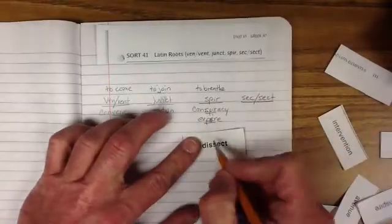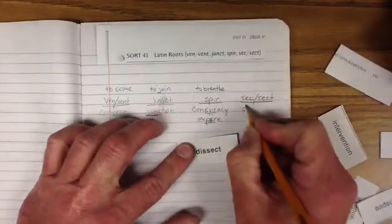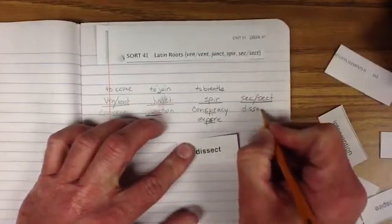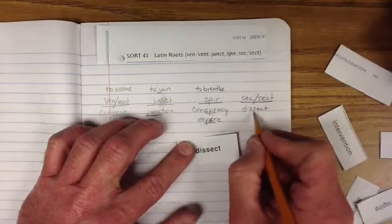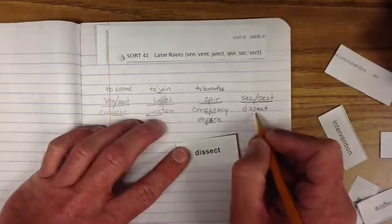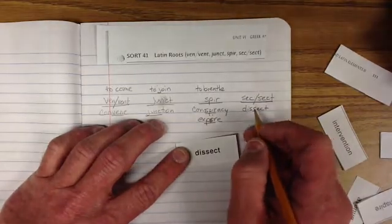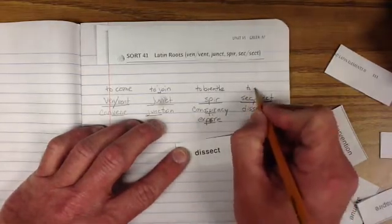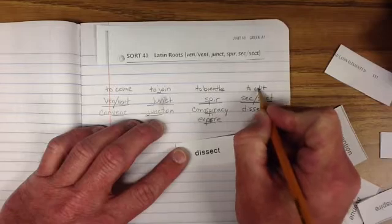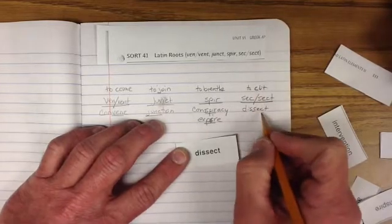Now sect or sect. Now this one's an interesting one. Because we've got dissect. So we put D-I-S-S-E-C-T. Notice those two S's in there. Okay. But we've got dissect, which means to cut. So if we're going to cut things into pieces, we dissect them.